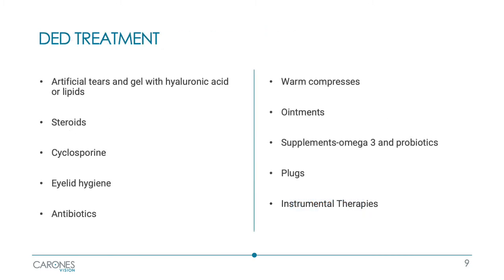These are the therapies available to treat dry eye disease: artificial tears with different constituents such as hyaluronic acid or fatty acids, topical steroids, cyclosporine, accurate eyelid hygiene, antibiotics — especially tetracycline if associated with blepharitis or blepharoconjunctivitis — warm patches, night ointments, omega-3 supplements or probiotics, plugs, and instrumental therapies.